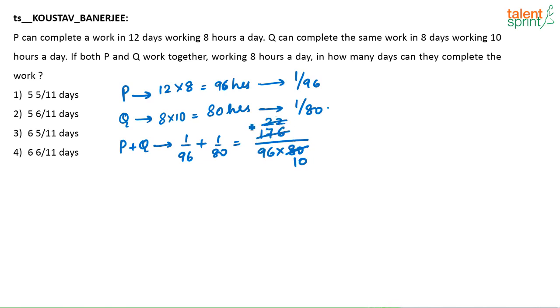You can just simplify this: 22, 11, 48. Or in 1 hour, they will do 11 by 480th of the work.